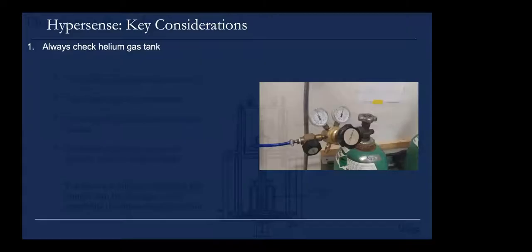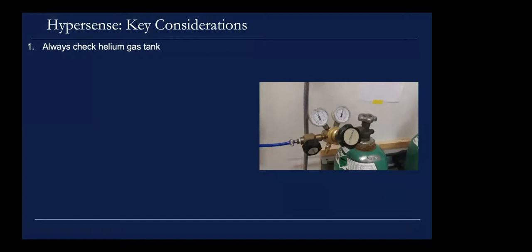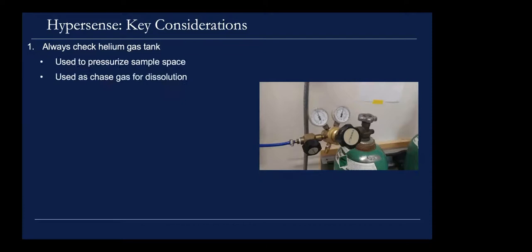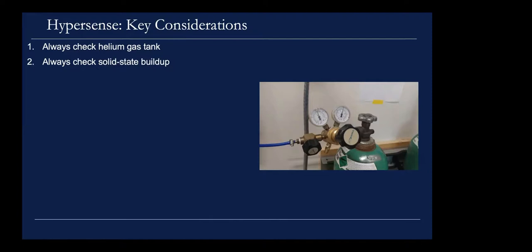A few things to keep in mind when running these experiments: always check the helium gas tank. It's used to pressurize the sample space and as chase gas to clear lines after dissolution. If you don't have sufficient helium gas, you won't be able to run the experiment; without positive pressure in the sample space, you'll pull air in, it'll freeze inside the insert, and the system will be down for days. Always also check your solid-state build-up — it's a quick sanity check and a good metric to monitor.